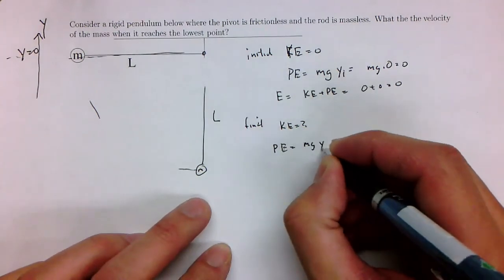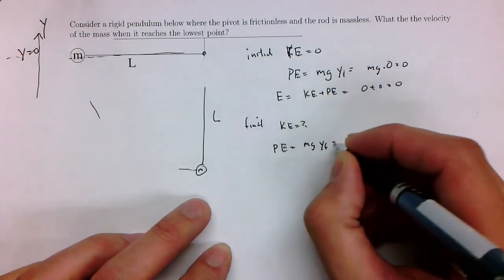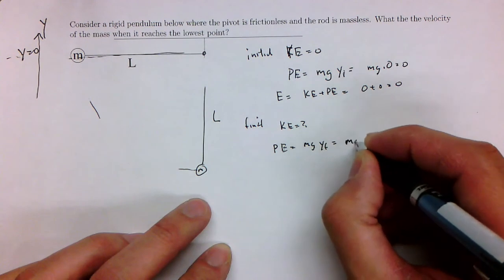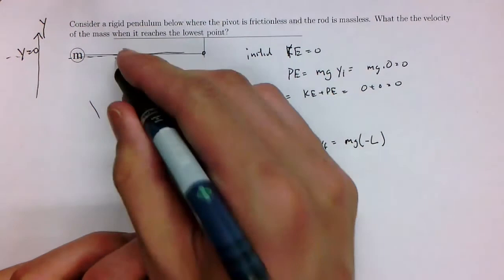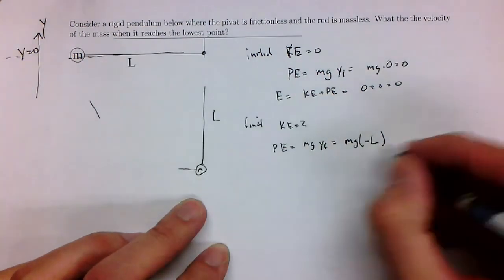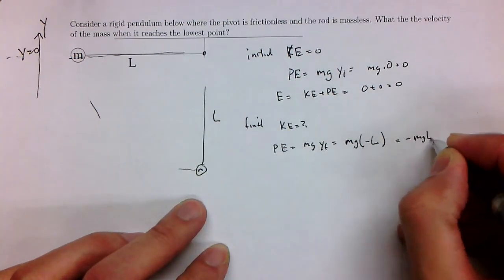It's going to be mg y final, maybe. And this is going to be mg times minus L because it's going to be minus L below where the y equals zero point has to be. So it's going to be minus mg L.